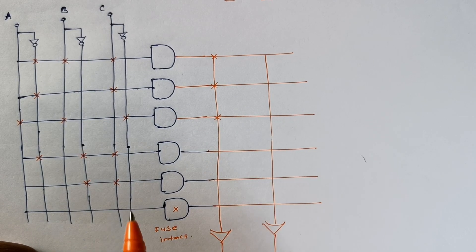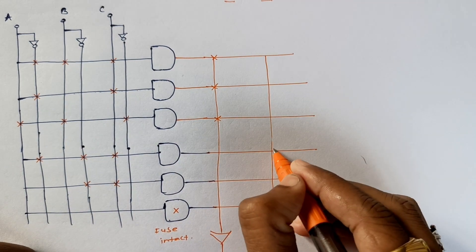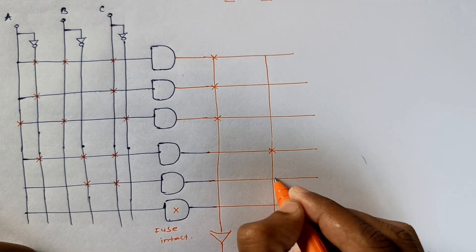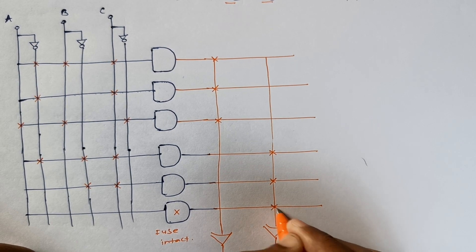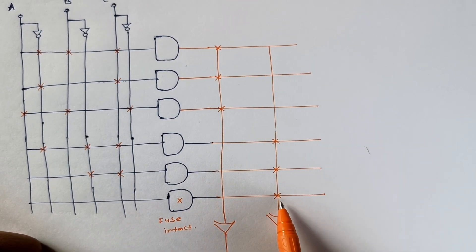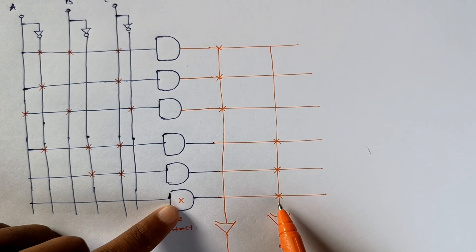In the same manner, we will take for F2. F2 is equal to A bar B bar C, this is it, B bar C, and this is not connected.